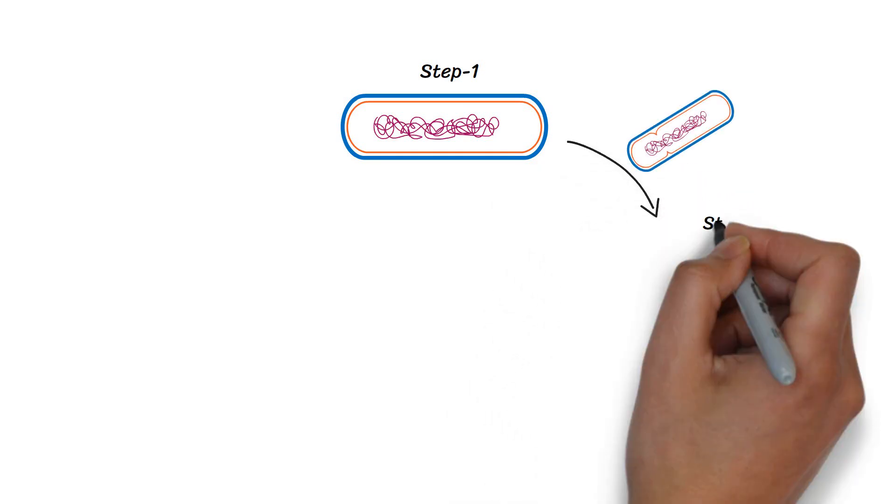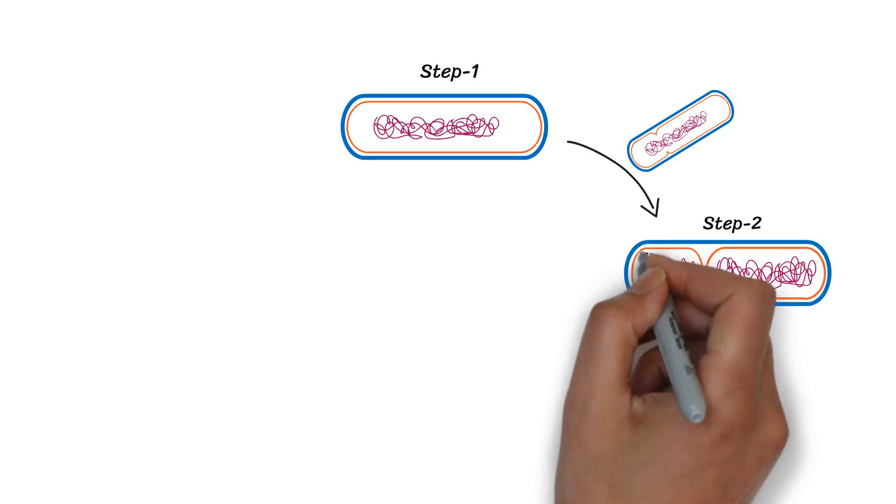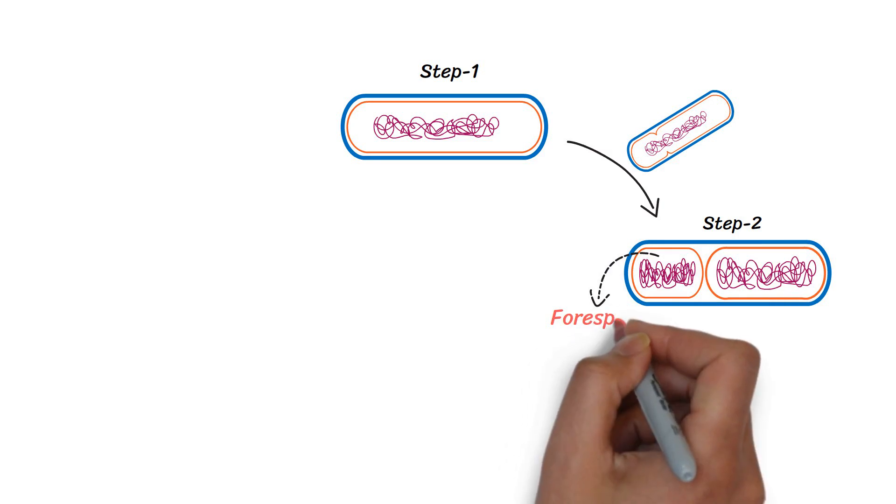In step 2, the plasma membrane folds inwards and forms a septum to enclose the part of DNA. This developing structure is known as forespore.